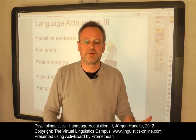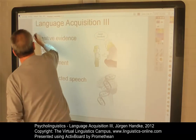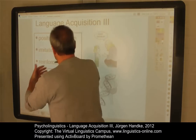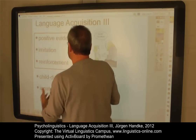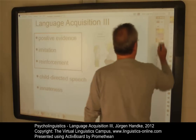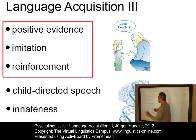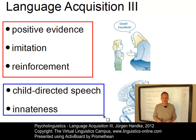This e-lecture discusses the driving forces of language development. Various enabling factors for language acquisition have been proposed. They concern positive evidence, that is, supporting children during the language acquisition process, the question whether children imitate adult speech, the importance of reinforcing children's utterances, the role of child-directed speech, and the debate between nativism and more empirical views of language acquisition.